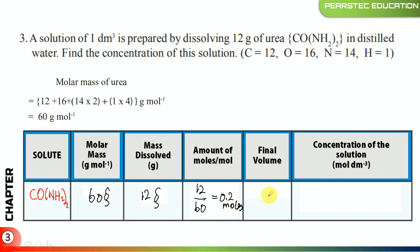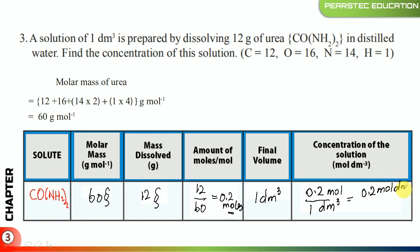The final volume is 1 dm³. As per the equation, concentration = moles ÷ volume in dm³. We have 0.2 moles and 1 dm³, so the answer is right in front of us: 0.2 mol dm⁻³. So, if any question comes like that, simply fill this table and find the answer. It's good practice.